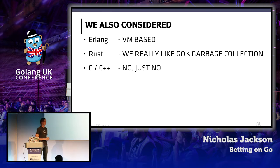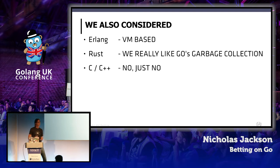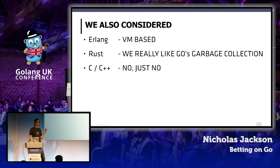So we looked at things like Erlang, but Erlang was VM-based and we didn't really want that — we wanted that single binary dependency. Rust was a consideration, but Go's garbage collection just really worked for us. And I think it was Armand who suggested we could actually use C or C++, and that option didn't stay on the table for very long, believe me.